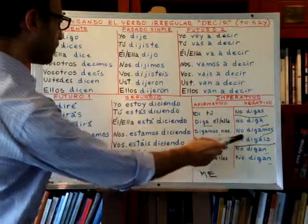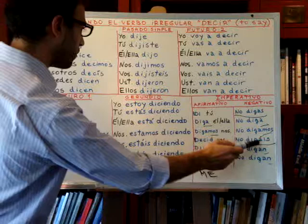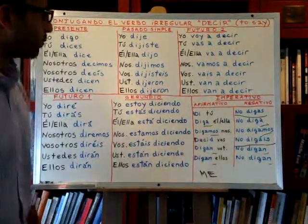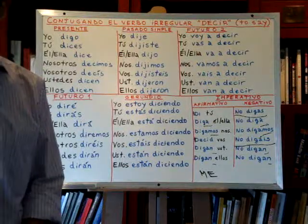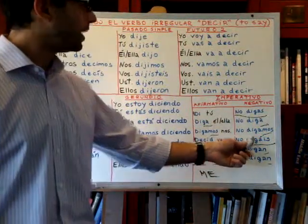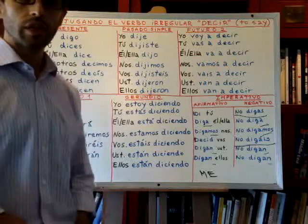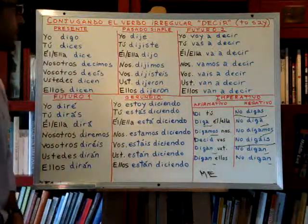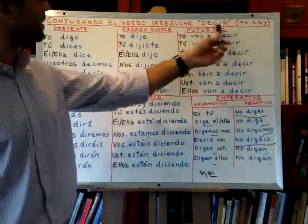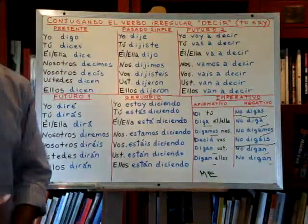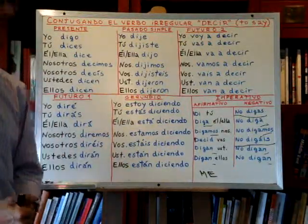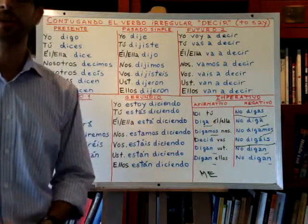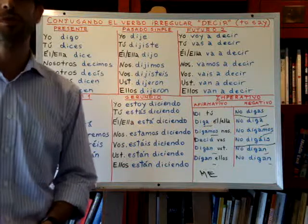See this difference between vosotros in the affirmative and the negative: vosotros decid que sí, and vosotros no digáis que sí — you say yes, or you don't say yes. So this is the verb decir, which means 'to say' and 'to tell.' We will conjugate next time the verb dar, which is another very important verb in Spanish — it means 'to give.'